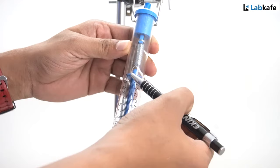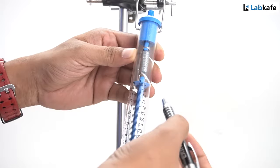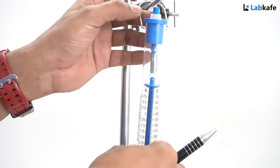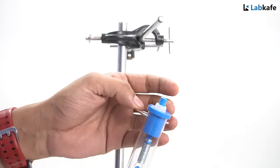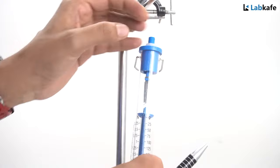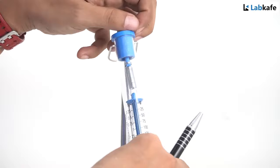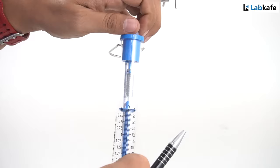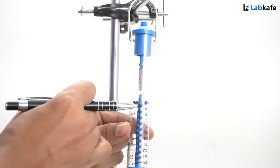we will check if there is any zero error in the spring balance or not. As we can see, the indicator and the zero mark of the gram scale are not coinciding, which means there is a zero error. To correct the zero error, we have to adjust the nut on top of the spring balance. I will adjust this nut until the indicator falls on the zero mark. Now as we can see that the indicator and the zero line are overlapping, therefore our spring balance has no zero error.